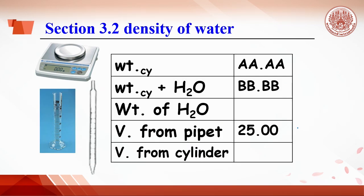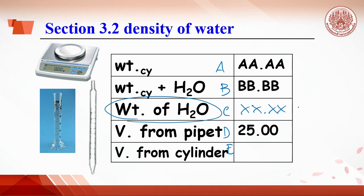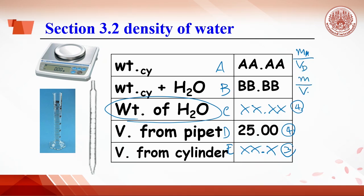For Section 3.2, calculating the density of water, the weight of water needs to be measured. The weight value should have 4 significant figures. The volume from the pipette gives 4 significant figures, but the volume from the cylinder gives only 3 significant figures. So the density should be calculated as mass of water divided by volume from pipette and volume from cylinder separately, giving two density values of water with different significant figures.